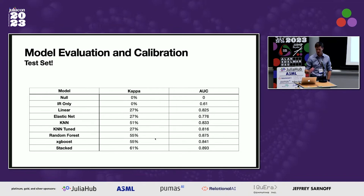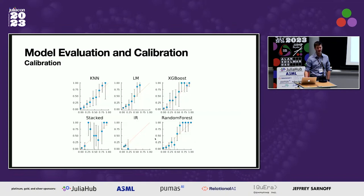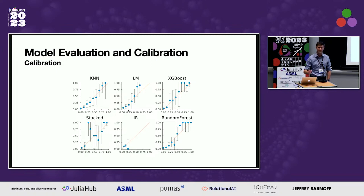Looking at model calibration: on the x-axis is our predicted default rate and on the y-axis is the actual default rate. The predictions increase with actual default rates, indicating the models are well calibrated. We can therefore use the model outputs to predict which loans will default, let that guide our investment decisions, and hopefully make some money.